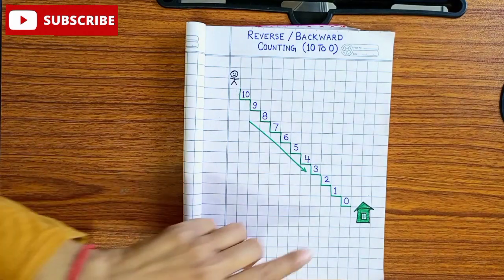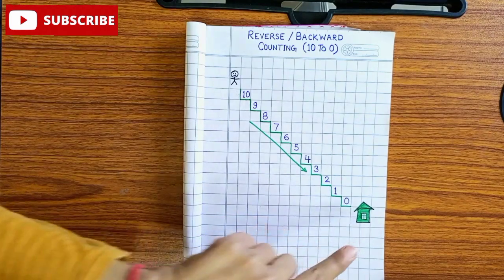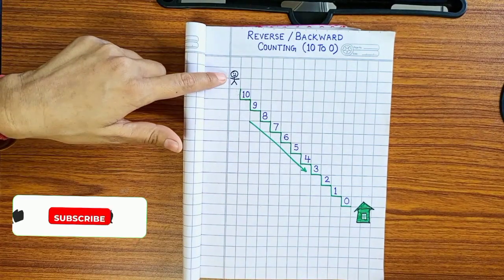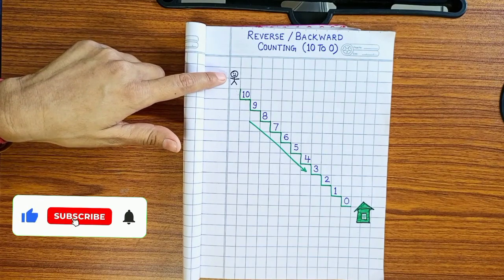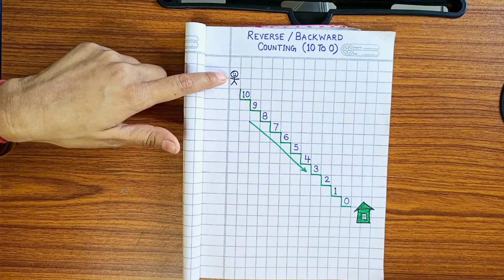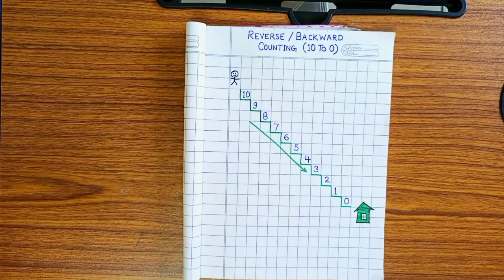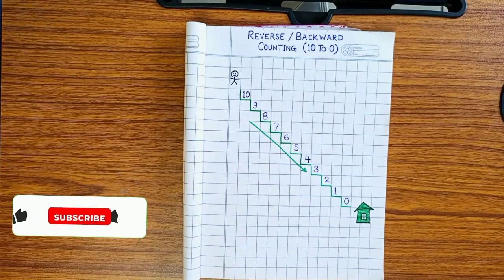Arav's home is near number 0 stairs, and Arav is standing on number 10. Arav wants to go back to home. How will you go back to home, Arav?